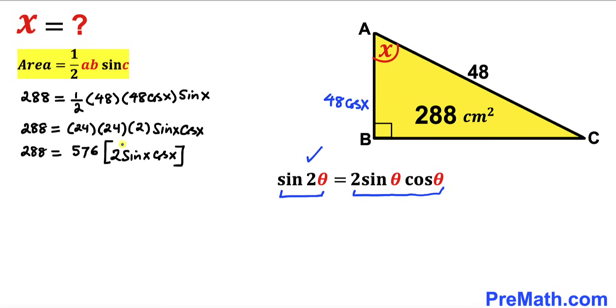2 sine X cosine X could be written as sine of 2X. Therefore, this equation becomes 288 equals 576 sine of 2X.